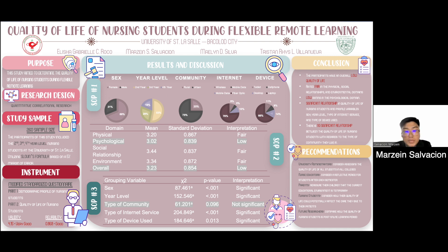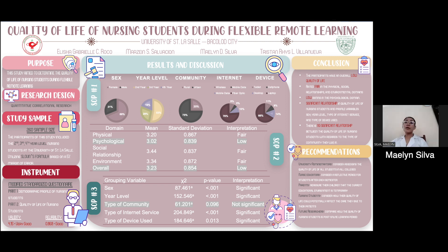For the demographic profile of nursing students, the majority of participants consisted of female respondents. Most of those who took part were from the third-year level, taking up 36.9% of the total 260 sample size. Three-fourths of the participants mainly reside within urban communities. In terms of internet service, 76.2% of participants are utilizing a fiber optic internet connection. Over half of the participants are using laptops to attend their online classes.